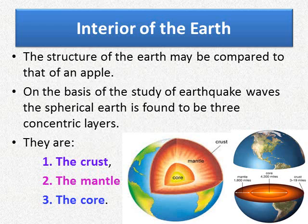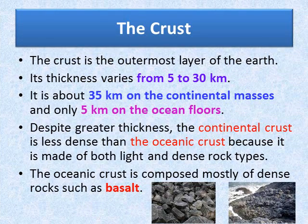The earth is made up of three concentric layers: crust, mantle and core. Now let us learn about the crust. The crust is the outermost solid part, normally about 8 to 40 kilometers thick and brittle in nature. Nearly 1% of earth's volume and 0.5% of earth's mass are made up of crust. The thickness of oceanic and continental crust varies — the oceanic crust is thinner compared to the continental crust. The crust is the outermost layer of the earth, with thickness varying from 5 to 30 kilometers, about 35 kilometers on continental masses and only 5 kilometers on oceanic floors.